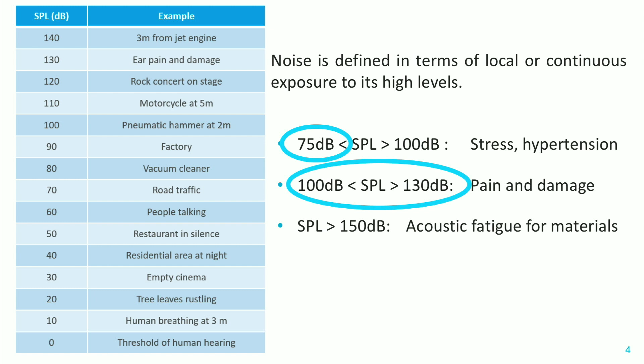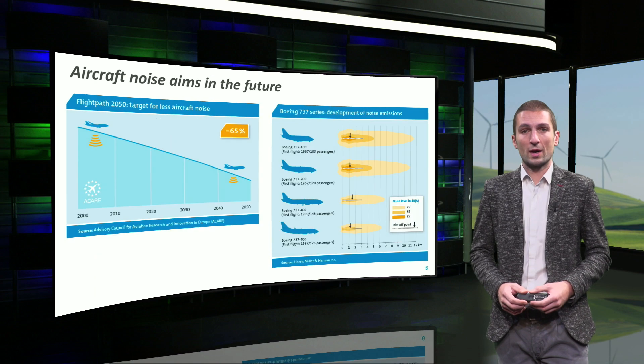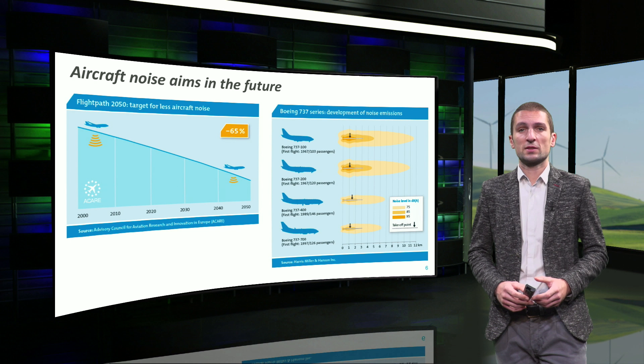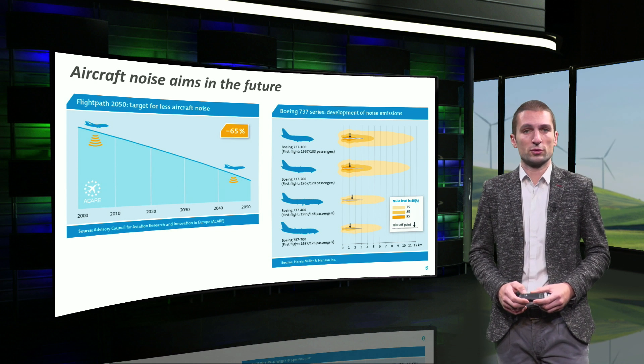Aircraft noise predictions have been developed through the years by certifying the level of maximum exposure and imposing new reduction targets for the next decade. In particular, about 10 to 15 standard dB reduction is required in the next decade for all topologies of aircraft. This requires, by 2050, having aircraft that are 65% quieter and with a lower exposure impact in the surrounding area of an airport.